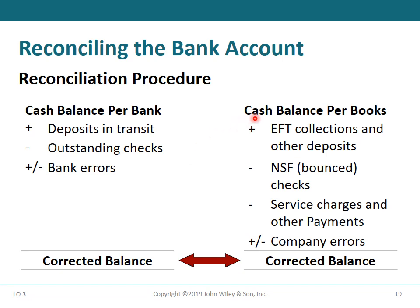When beginning from the cash balance per books, add electronic fund transfer collections and other deposits recorded in the bank statement but not yet in company books. Deduct non-sufficient fund checks, service charges, and other payments recorded in the bank statement but not yet in company books. Add or deduct company errors depending on type. The result is the corrected balance, which should equal the corrected bank balance.